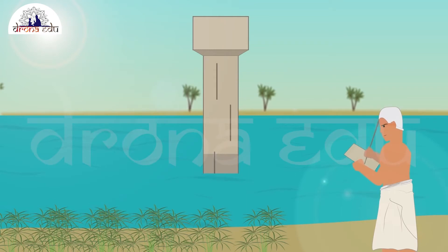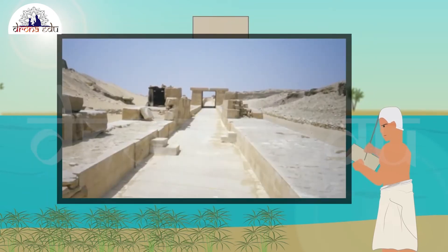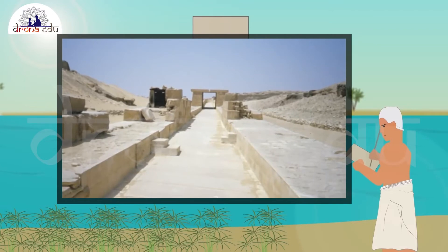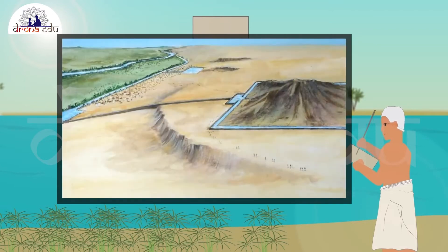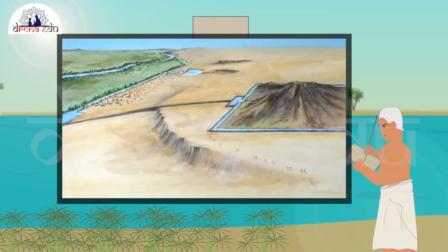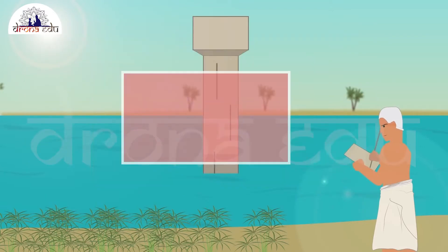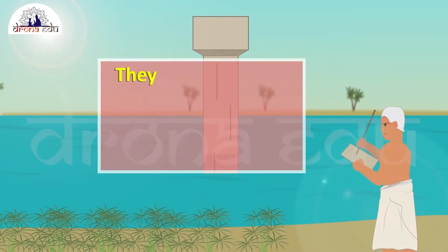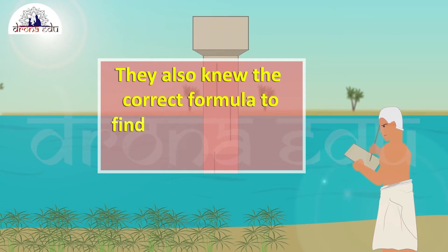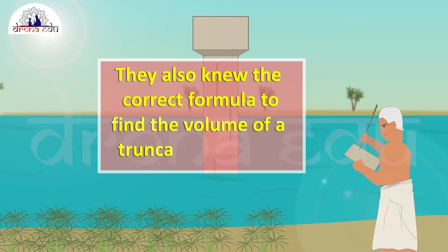The knowledge of geometry was also used by them for computing the volumes of granaries and for constructing canals and pyramids. They also knew the correct formula to find the volume of a truncated pyramid.